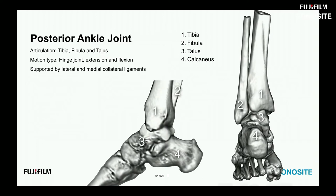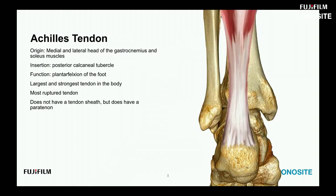Here are bony reference points for the posterior ankle — posterior tibia, fibula, talus, and calcaneus. We're primarily focused on the calcaneal insertion. The Achilles tendon originates from the medial and lateral heads of the gastrocnemius and soleus muscles, converging to insert on the posterior calcaneal tubercle. Its function is plantar flexion; it's the largest and strongest tendon in the body, and also the most ruptured. It does not have a tendon sheath, but does have a peritenon.